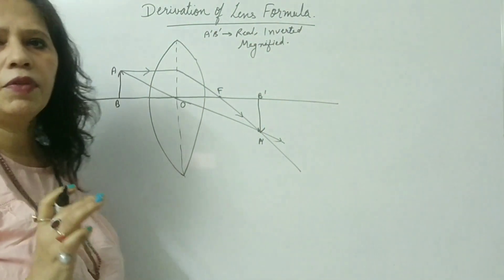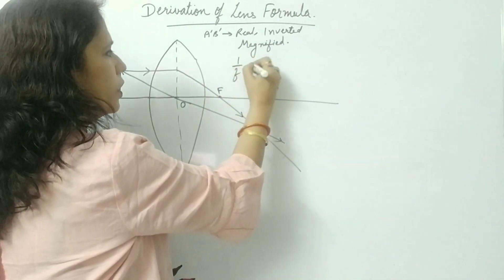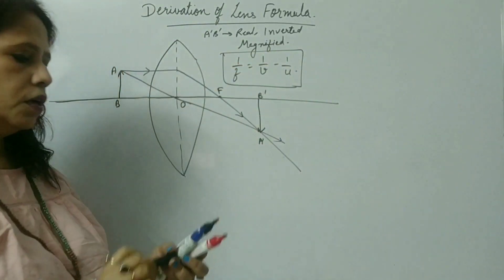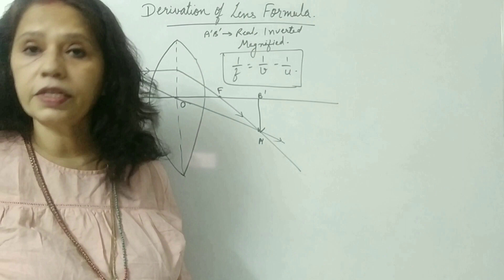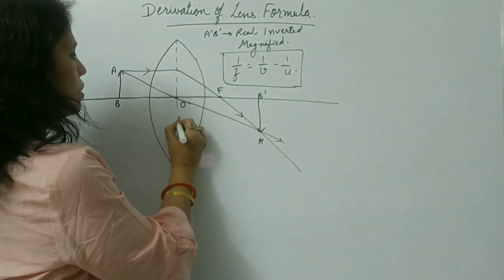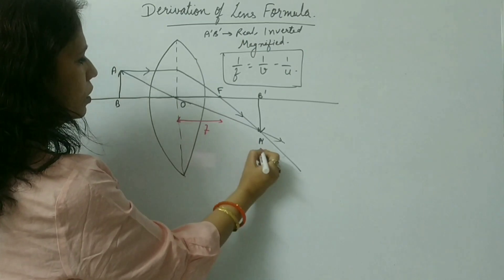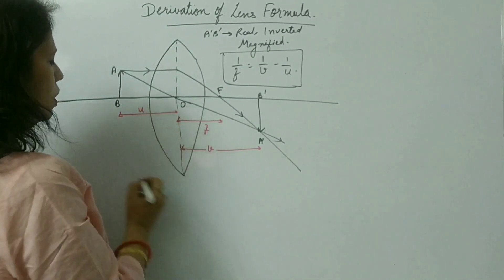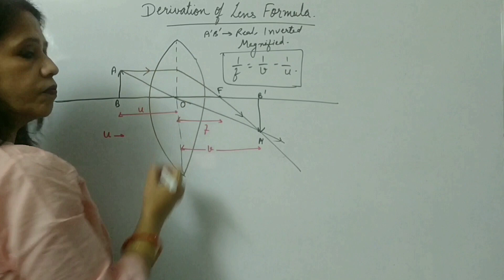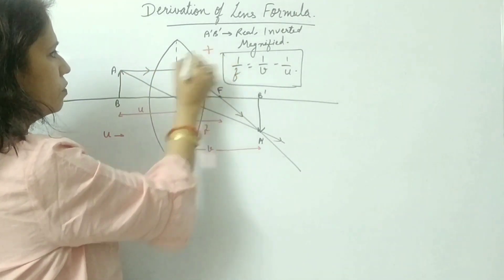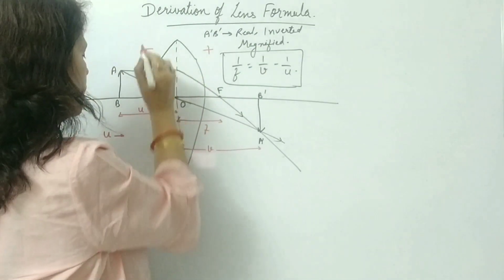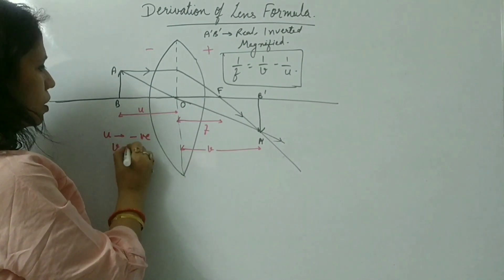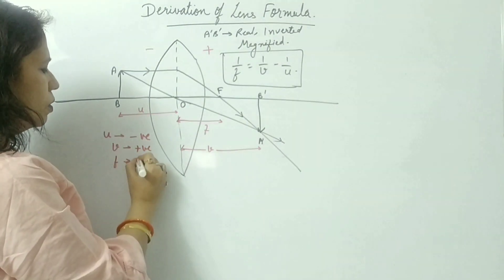Now we will derive the lens formula: 1/F = 1/V − 1/U. The image distance is V (positive), the object distance is U (negative), and the focal length F is also positive, using the sign convention where the direction of the incident ray is taken as positive.